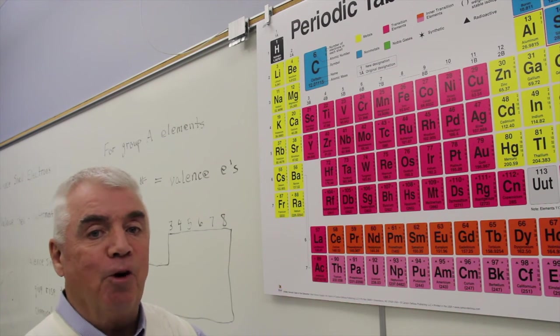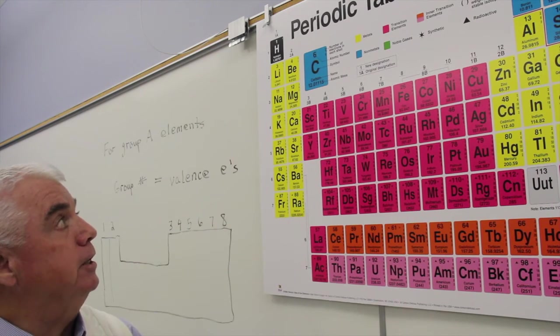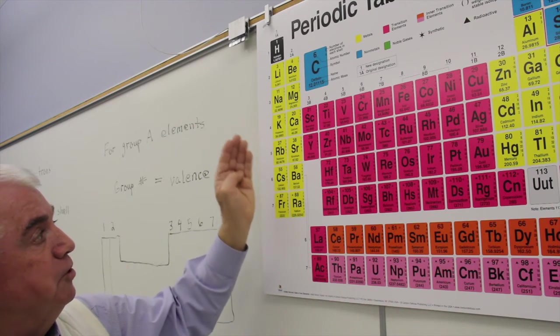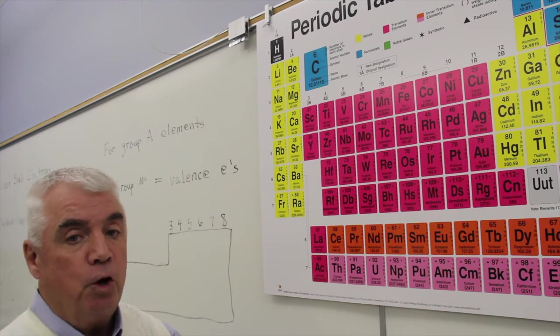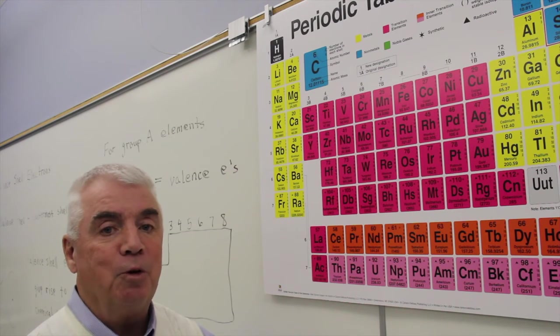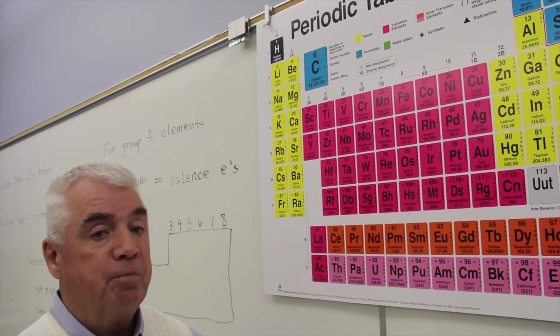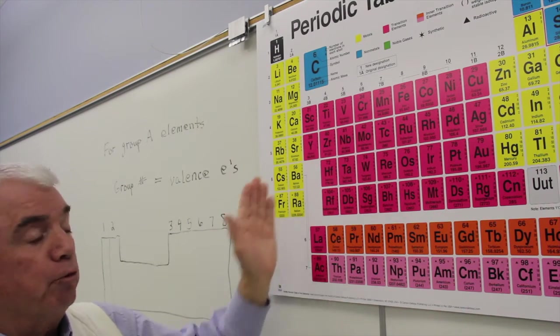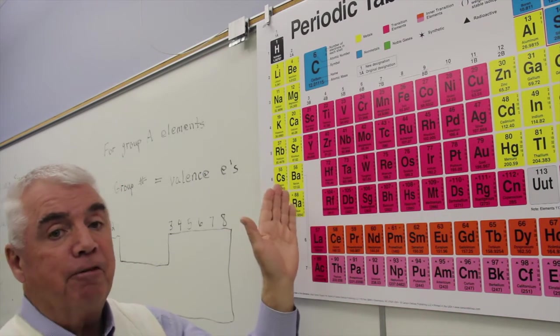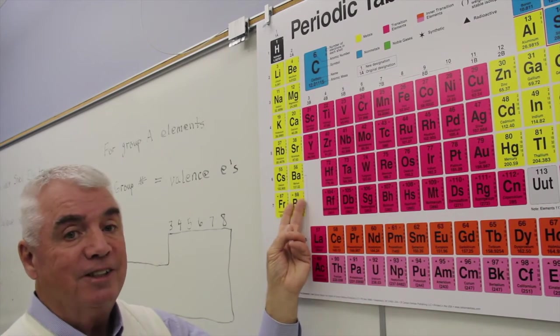So it's easier for sodium to lose one than it is to gain seven. So sodium in its reactions tends to give up an electron and to become Na+, an ion, a positively charged ion. And that's true of lithium, potassium, rubidium, and so on. All of the elements in this column have one outermost electron. They all tend to form a plus one ion. Those elements in group two have two valence shell electrons. It's easy for them to give up those two and to become a two-plus element.